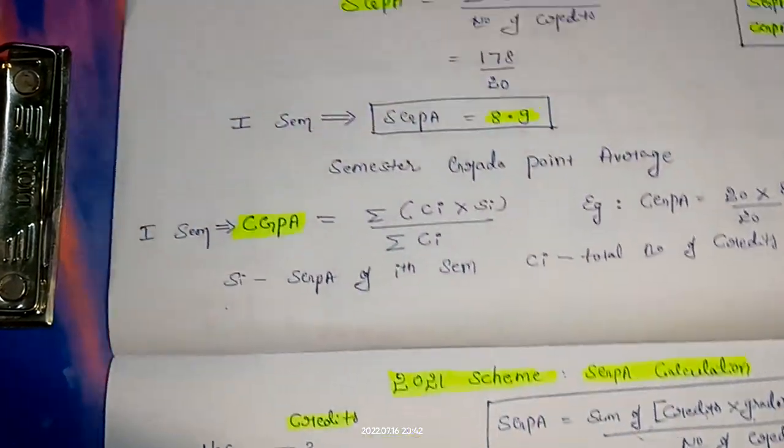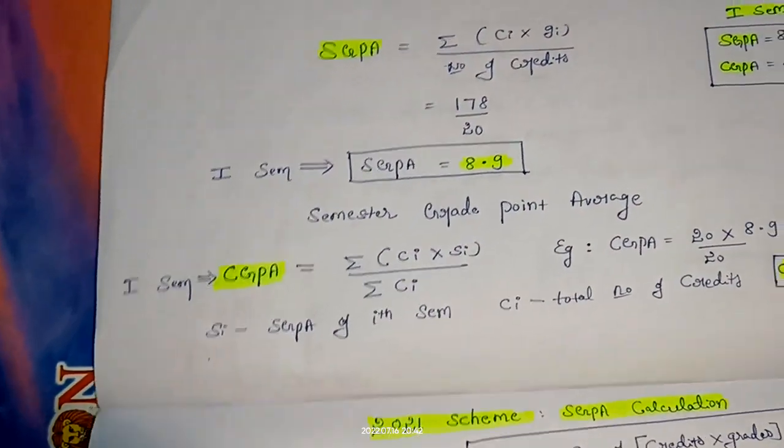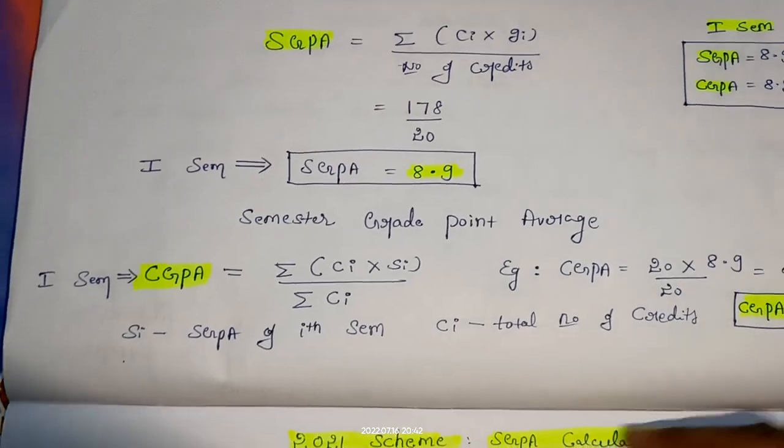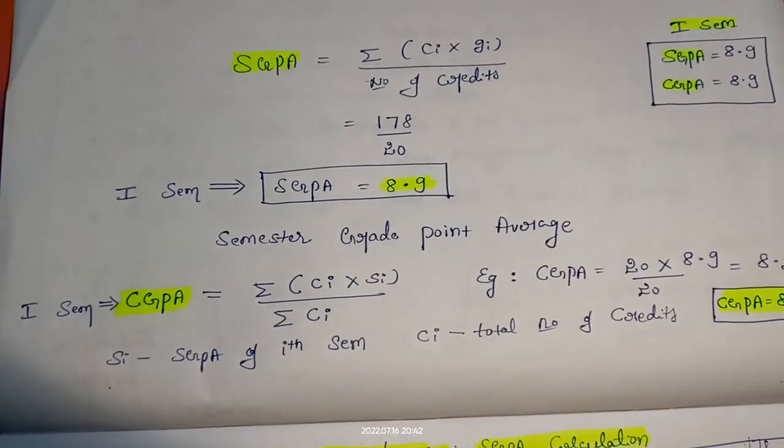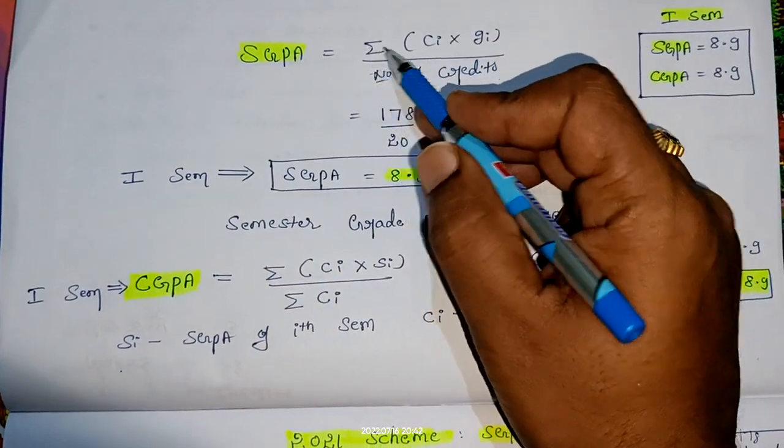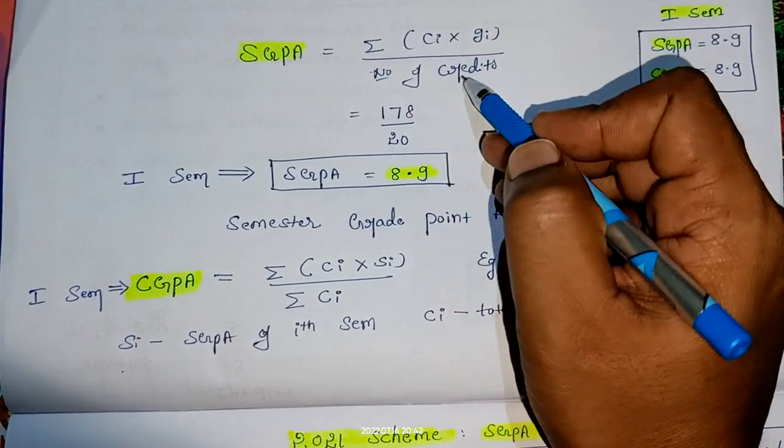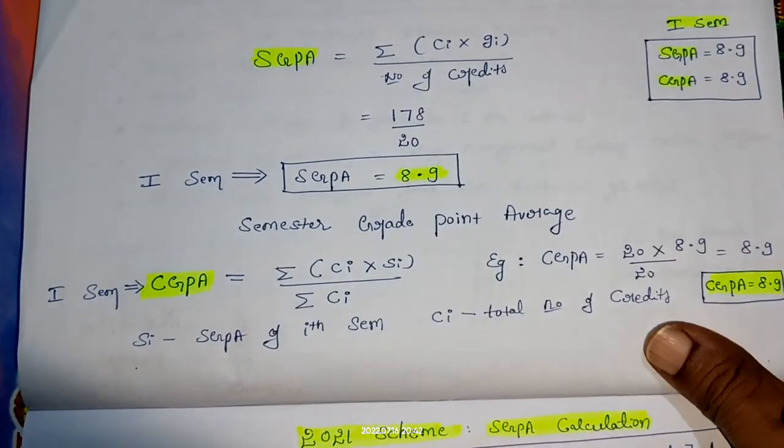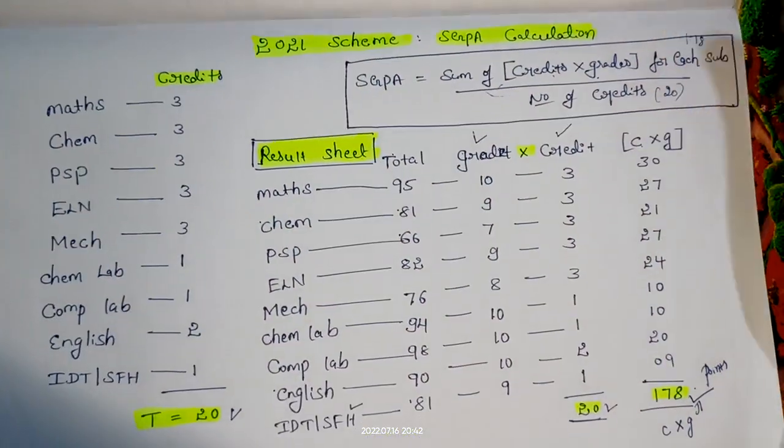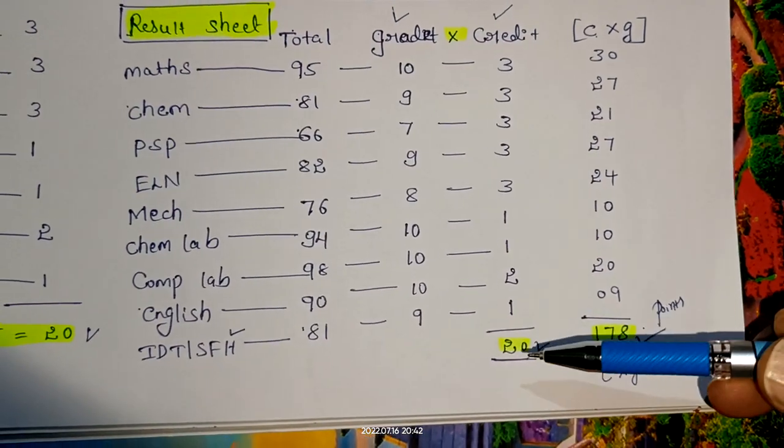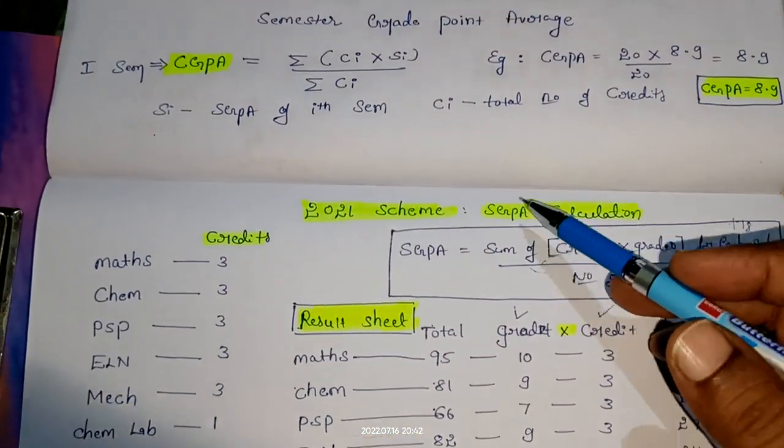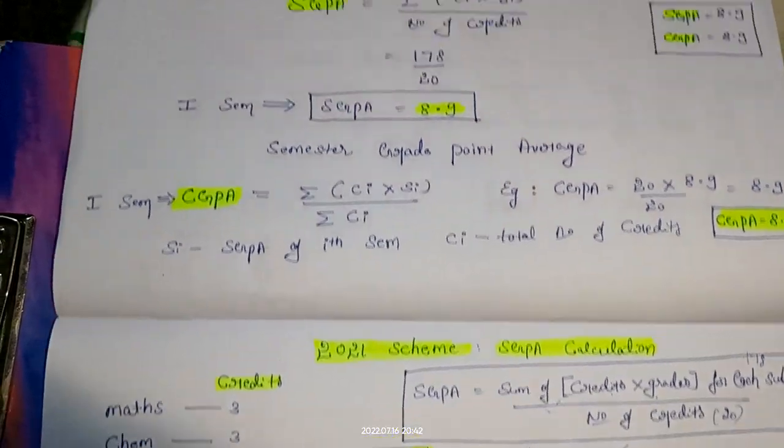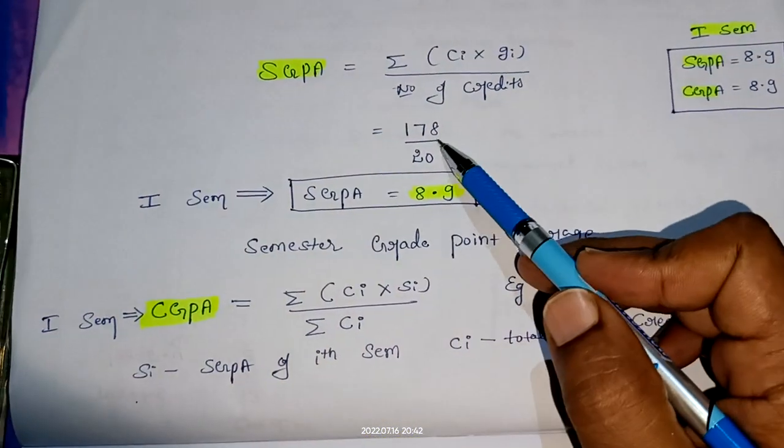I will go to the next page. In this page, you will see the exact SGPA calculation and percentage calculation. SGPA equals summation of Ci into Gi divided by number of credits. The marks he got—the points—is 178. This 178 divided by 20.